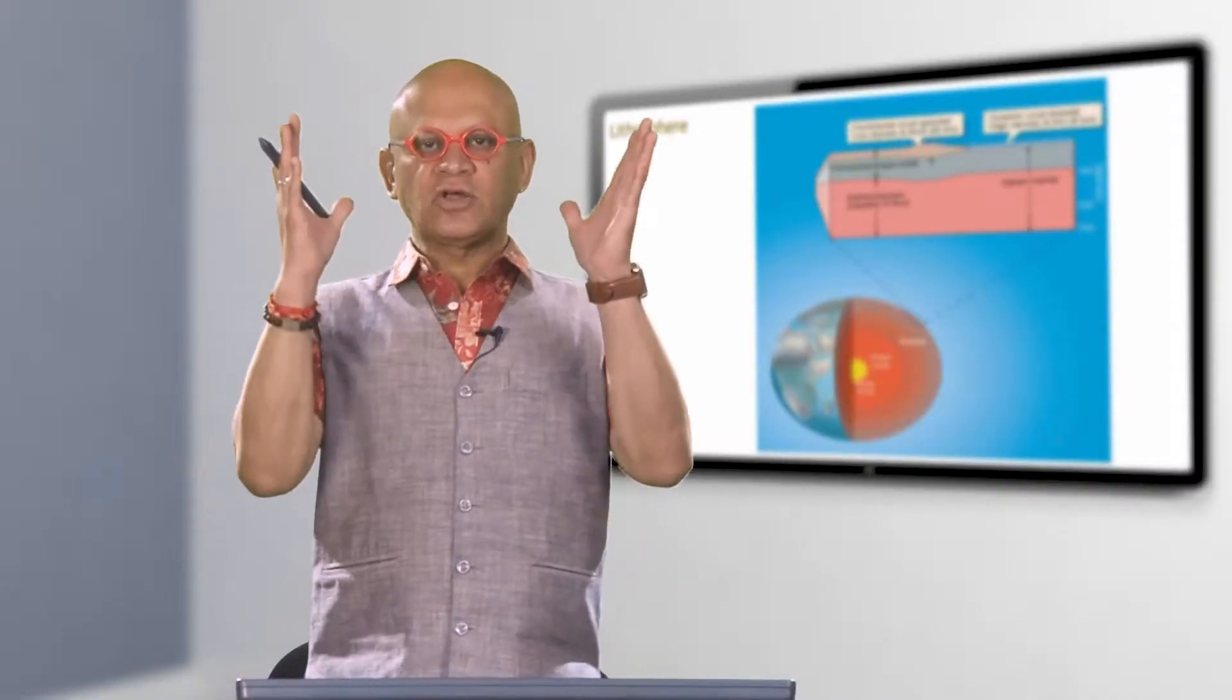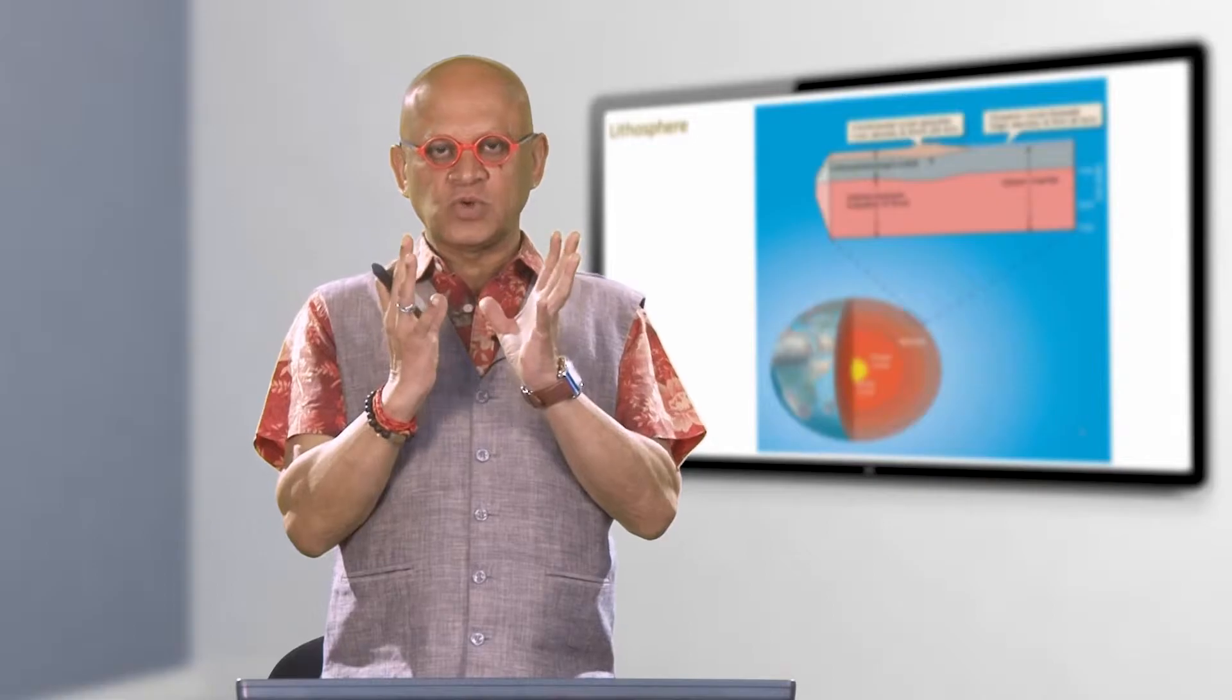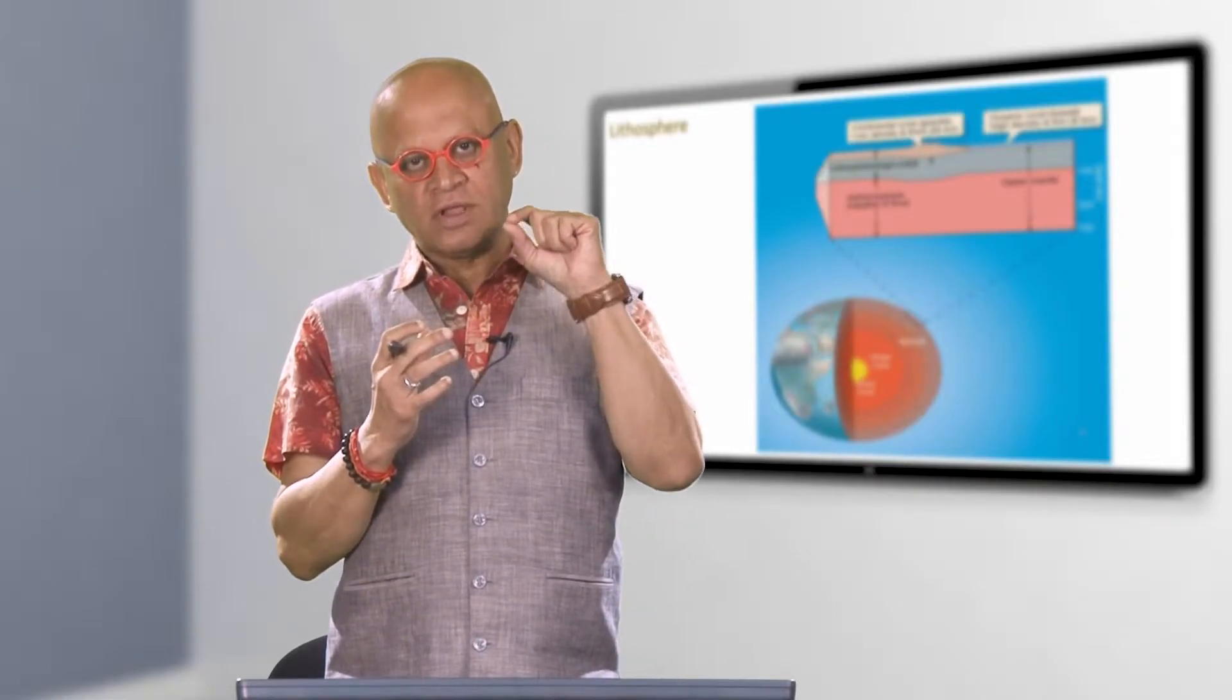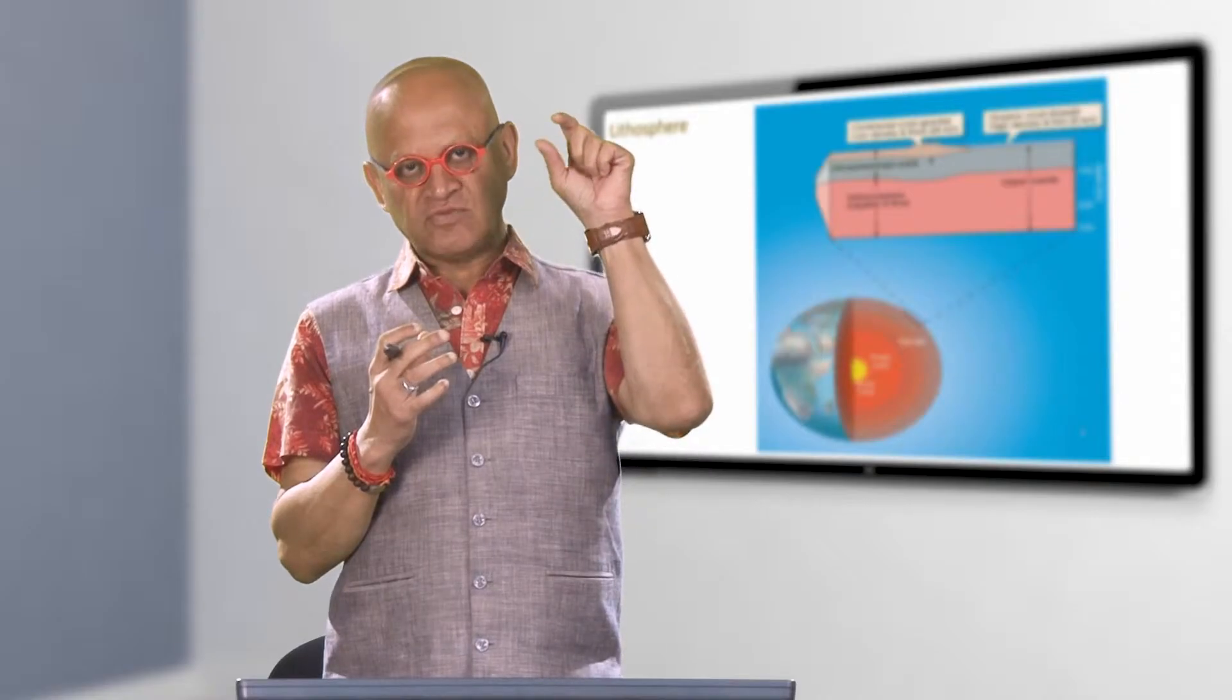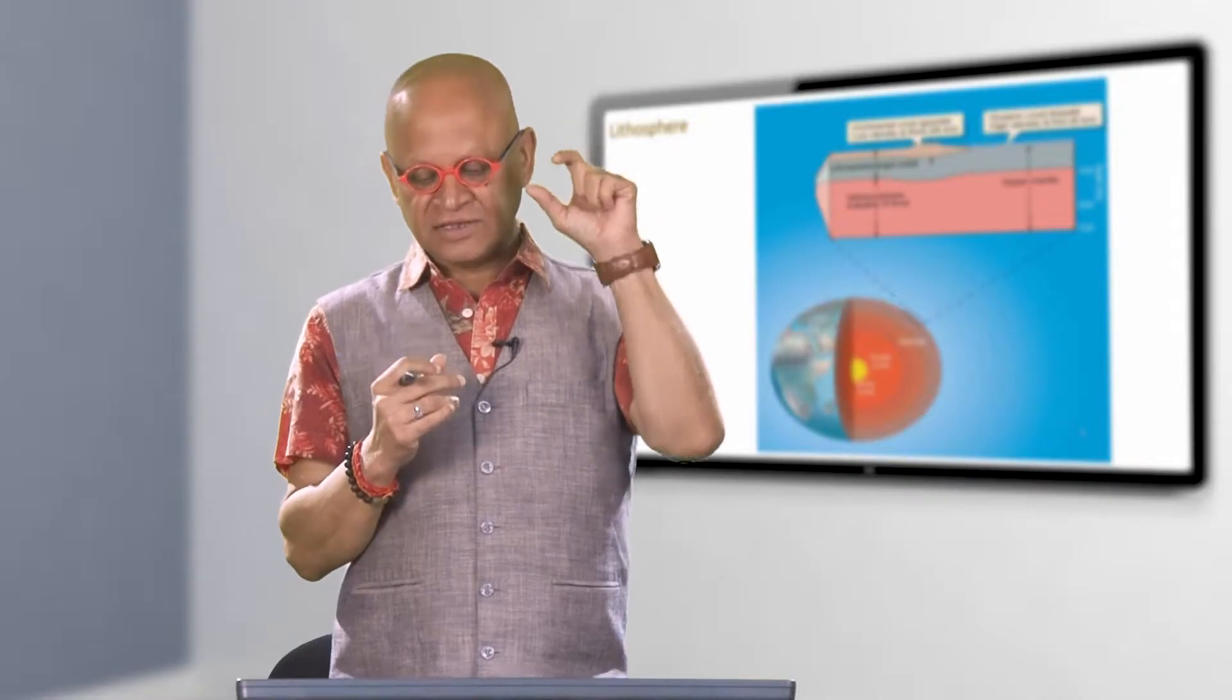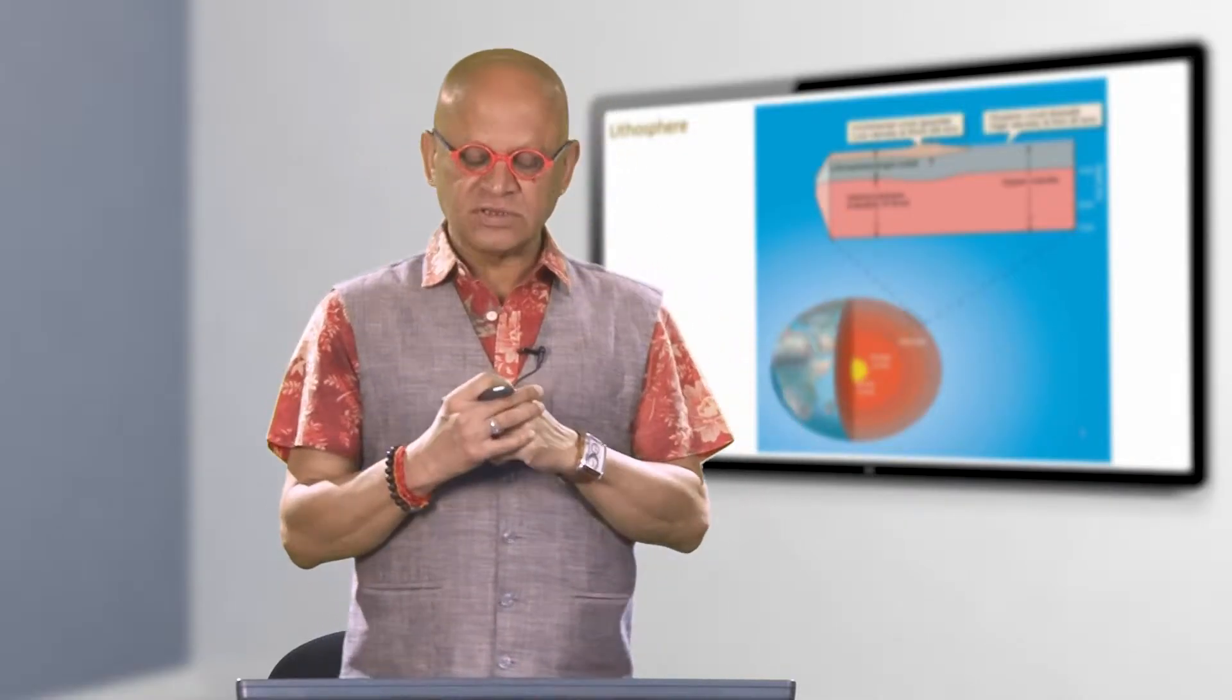In the first module we saw a cross section of the earth which showed the main sections: the inner and outer core, the mantle and the crust. We saw that the upper part of the mantle and the crust together we called the lithosphere.